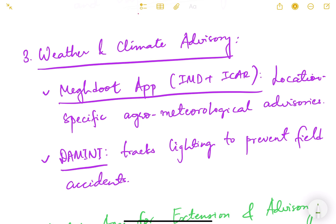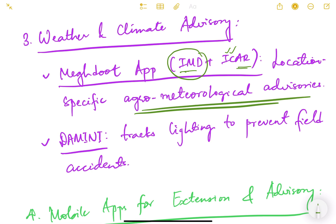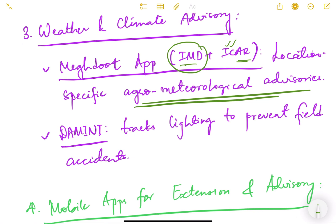For weather and climate advisories, the Megdoot app is developed by IMD (Indian Meteorological Department) and ICAR (Indian Council of Agricultural Research). It provides location-specific agro-meteorological advisories for particular states or districts. Damini is another application that tracks lightning to prevent field accidents. These are some of the digital technologies that help farmers.